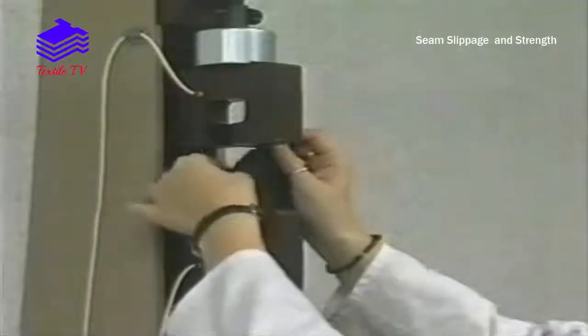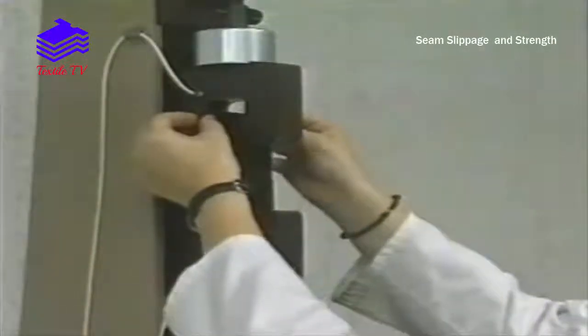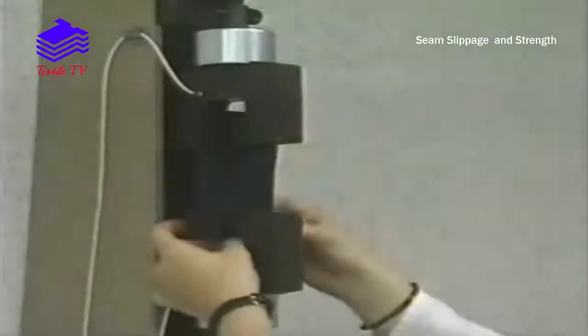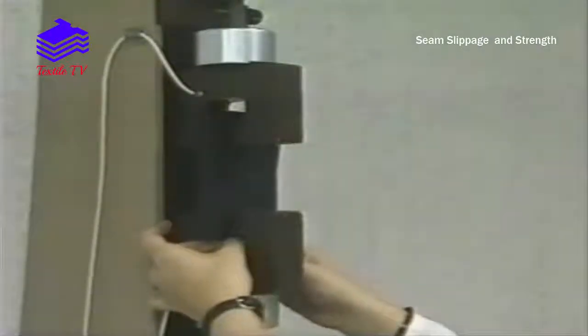An unseamed test specimen is mounted into the top jaw and clamped in position, and then mounted in the bottom jaw and clamped in position, ensuring that the specimen is straight.